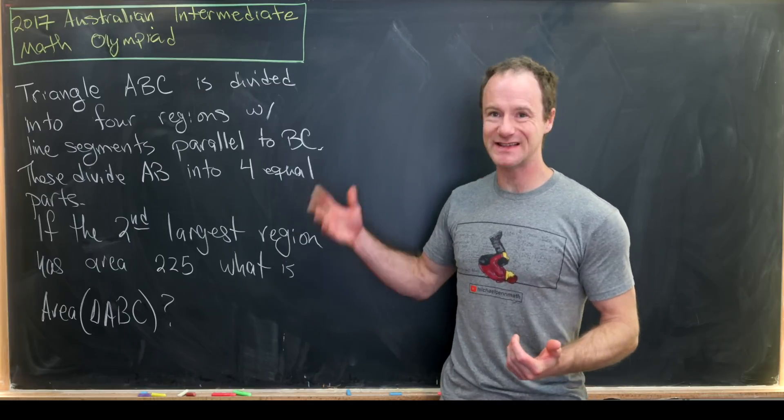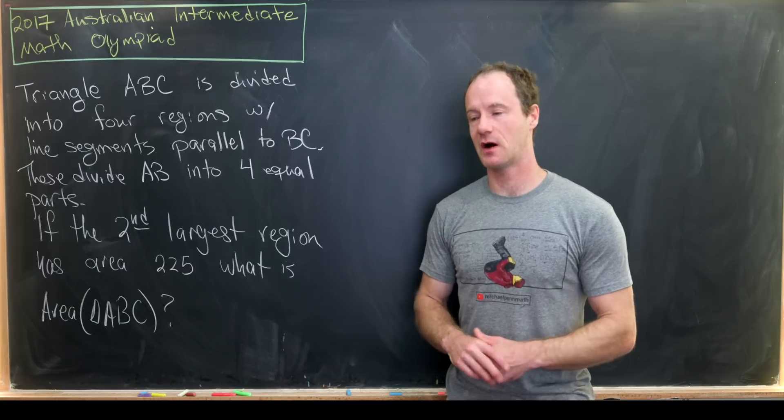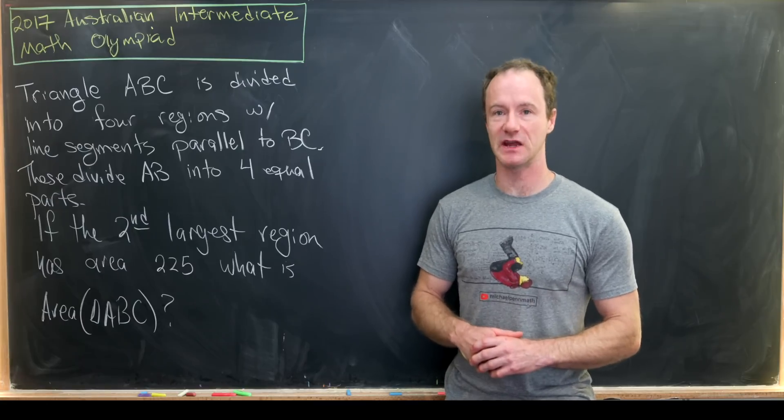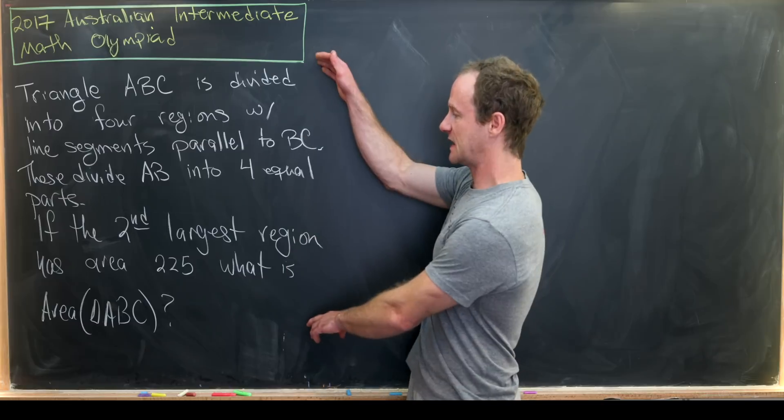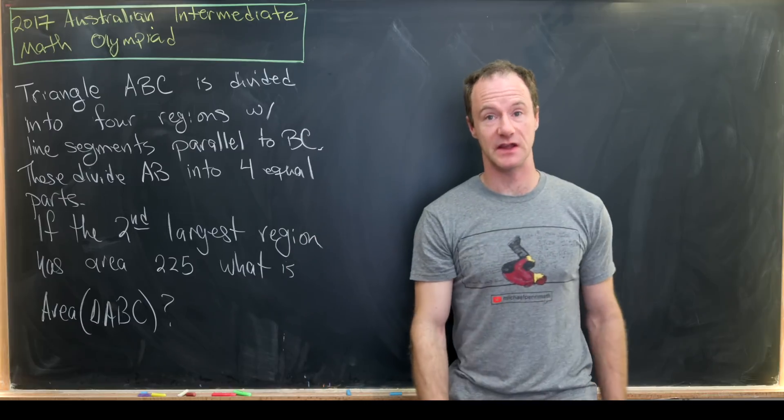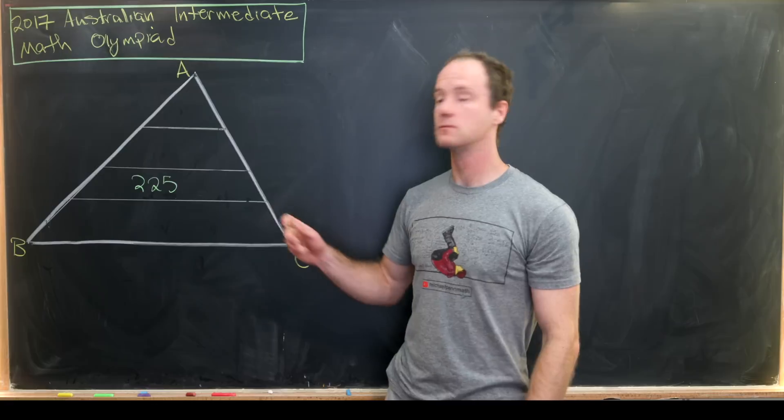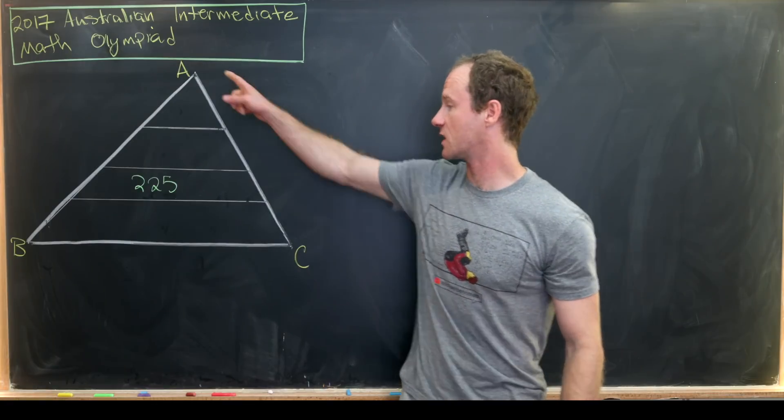In order to get started with this type of geometry problem, it will be extremely useful to make a picture. So let's translate this paragraph into a diagram. There we go. We've got our triangle ABC.